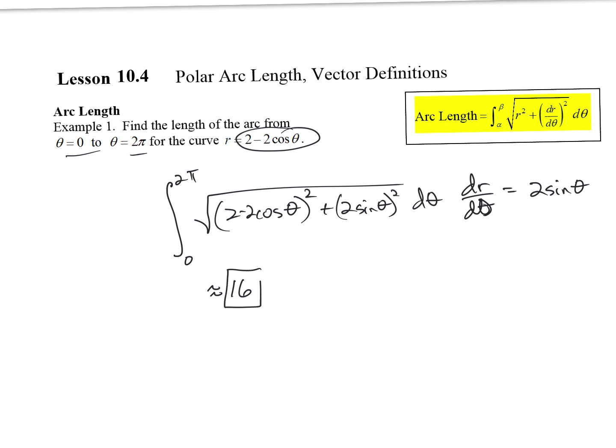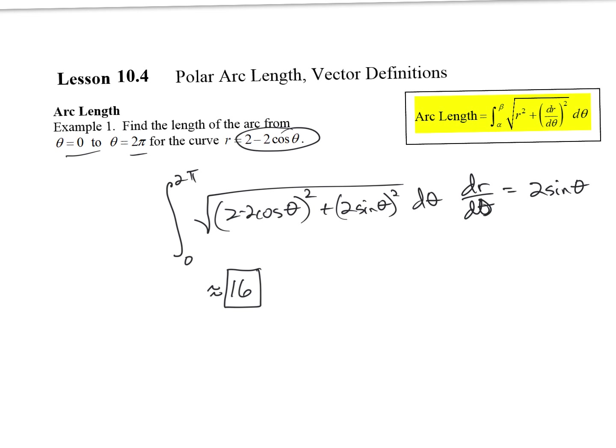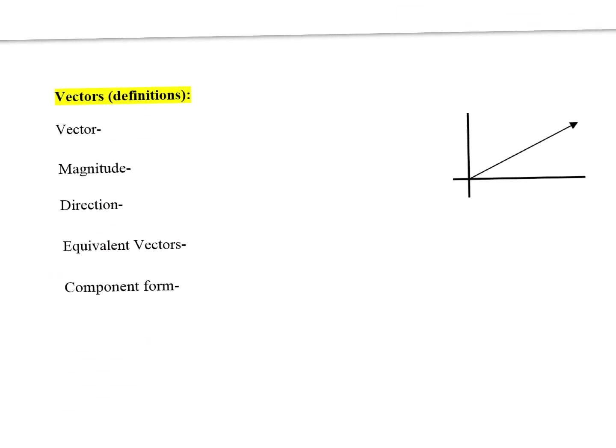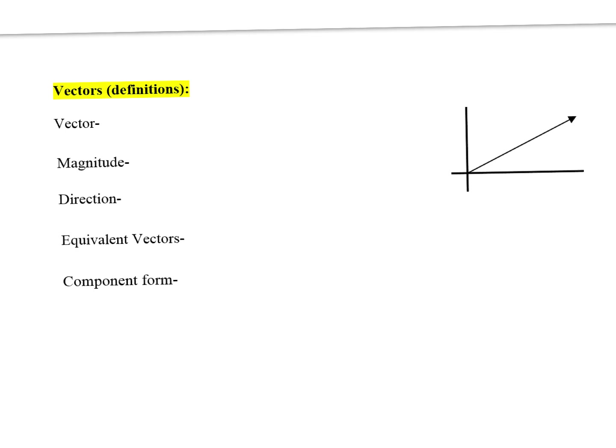So that is polar arc length. Those arc length formulas are all similar — you just have to know them. There are arc length problems on your homework for polar and it's on this test. However, the textbook notes that polar arc length is no longer on the AP exam, so when you study for the AP exam you only need to know the parametric and rectangular formulas. But for this exam, you do have to know it, so go ahead and memorize it.